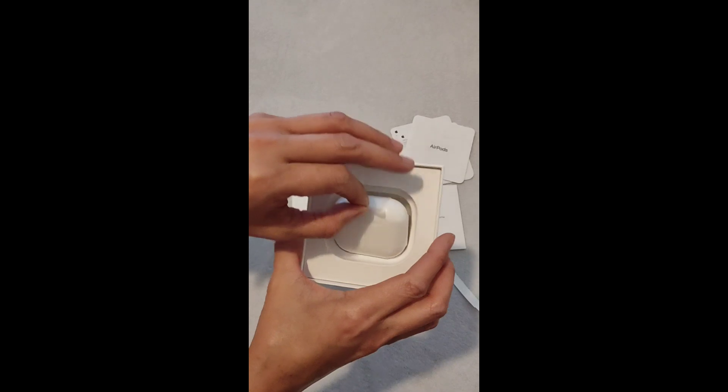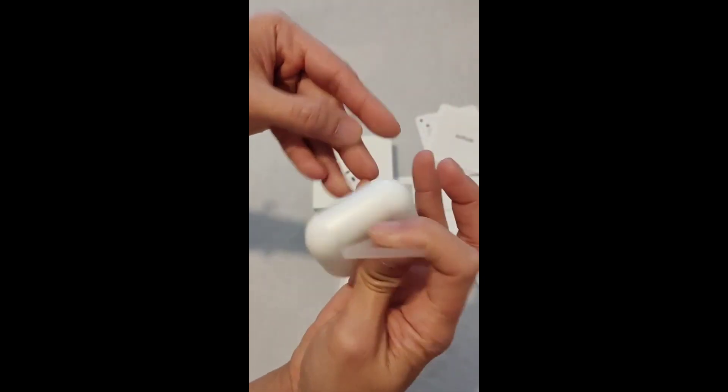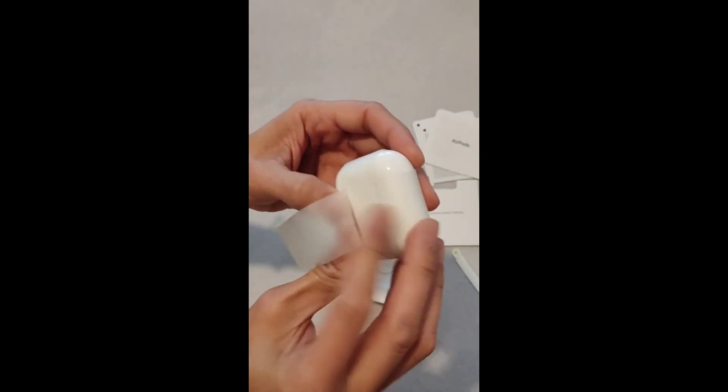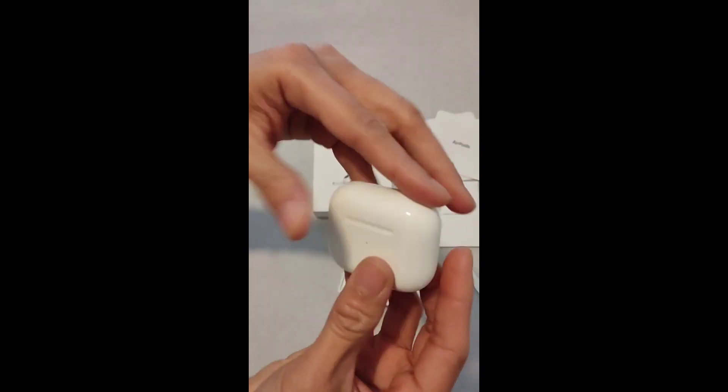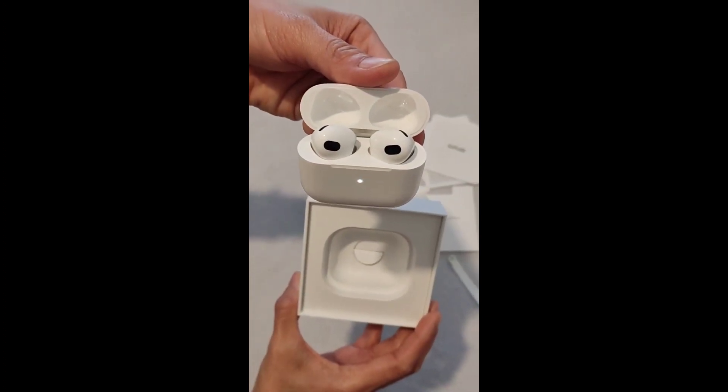The AirPods 3 have shorter stems and rounder, more bulbous earpieces. The case is very similar to the AirPods Pro 2—shorter and wider, and with wireless charging capability standard.